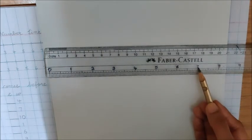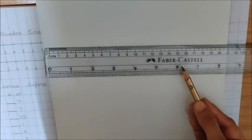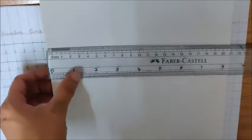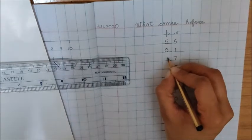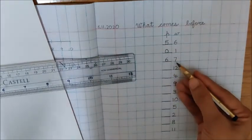Check. Number 7, children, check. What is before 7? 6. So, write number 6. 6 comes before 7.